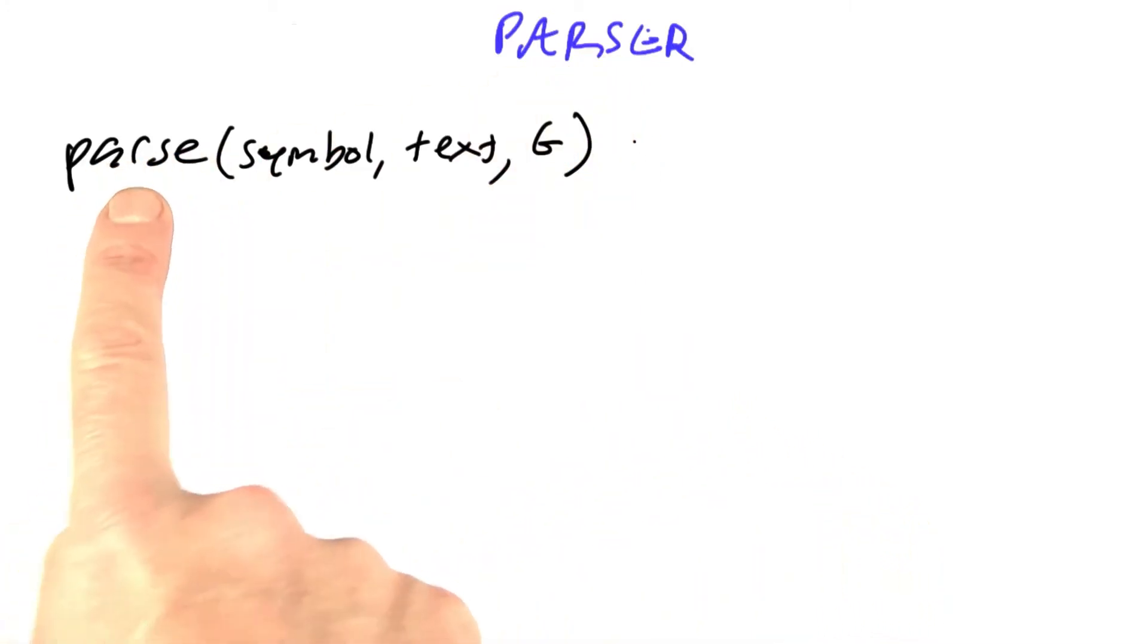Now I'm going to define the parser, and I want it to have this signature. I'm going to define a function parse which takes a symbol, saying I want to parse something like an expression. It takes text that we're going to parse, and it takes the grammar that defines that symbol and all the other symbols.